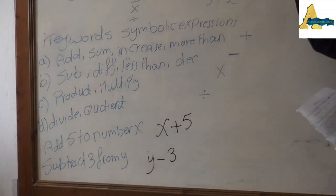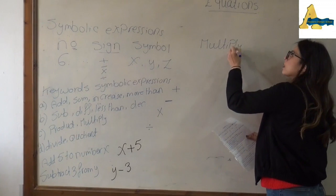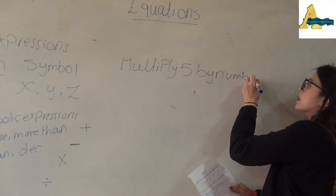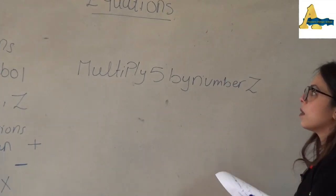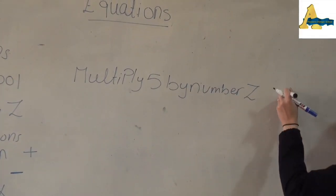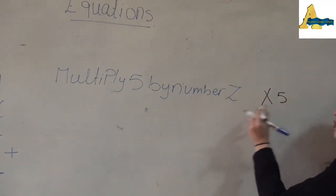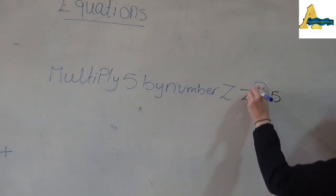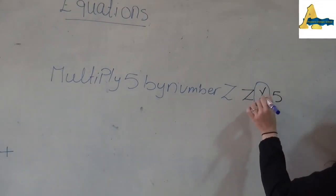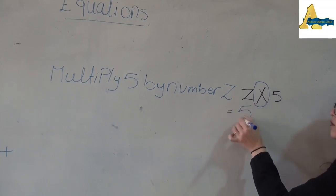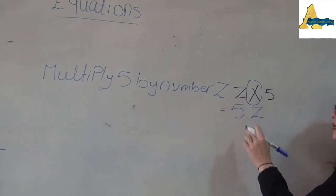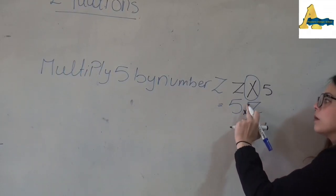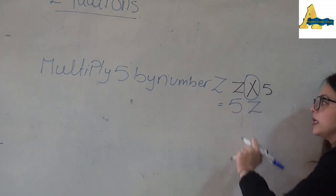If he said 'multiply 5 by the number z': multiply means the sign times, multiply 5 by z. But in multiplication, the sign can be hidden. Z times 5 is the same as 5z — here the sign between 5 and z is multiplication, but in multiplication the sign can be hidden.